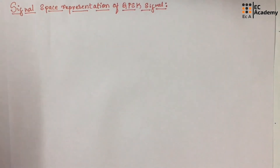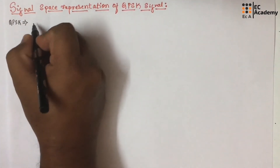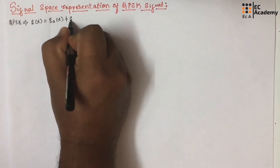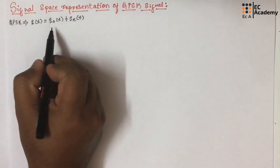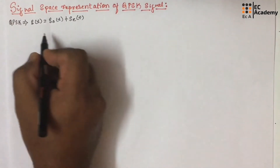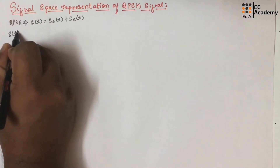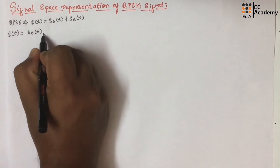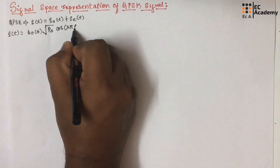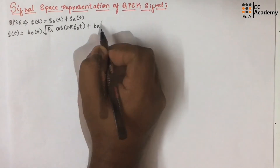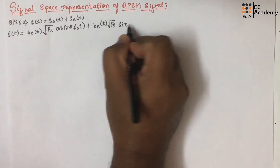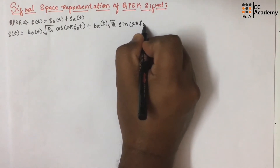Now let us consider a QPSK signal. We can represent the QPSK signal as S(t) = S₀(t) + Sₑ(t), where S₀(t) represents the odd sequence and Sₑ(t) represents the even sequence. We can write this signal as S(t) = B₀(t)·√(Ps)·cos(2πF₀t) + Bₑ(t)·√(Ps)·sin(2πF₀t).